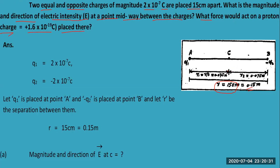This is the charge q1 and -q2. Let q be placed at point A and -q be placed at point B. Let r be the separation between them, starting from this point ending at this point, which is 0.15 meters.